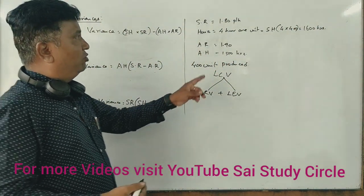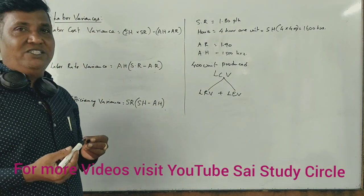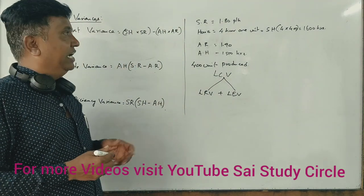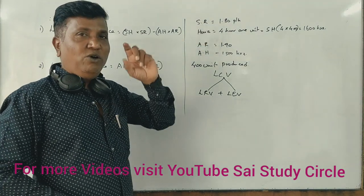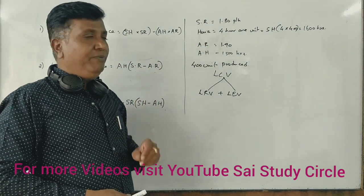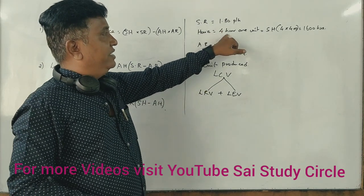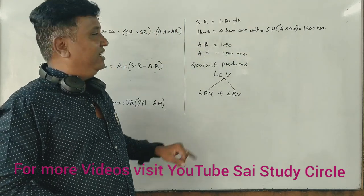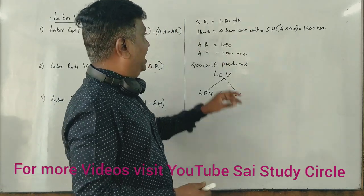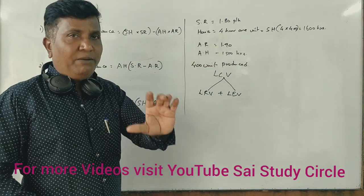If we calculate the labor cost variance, the standard rate is 1.80. The total hours are 4 hours for manufacturing 1 unit. And the actual rate is 1.90.